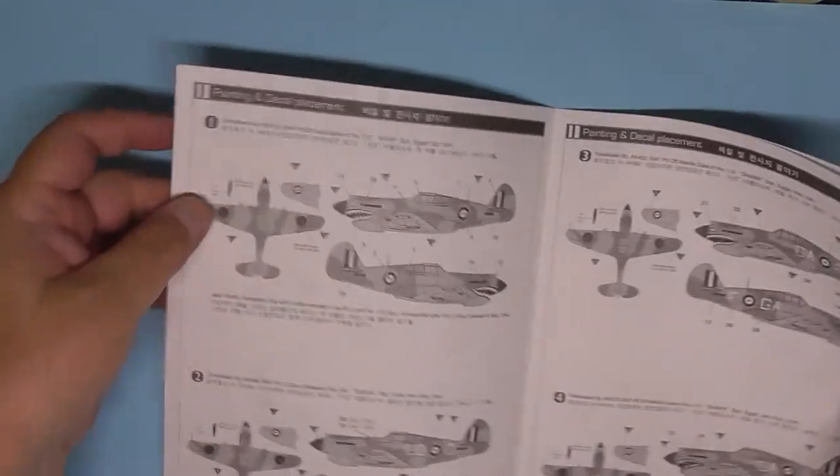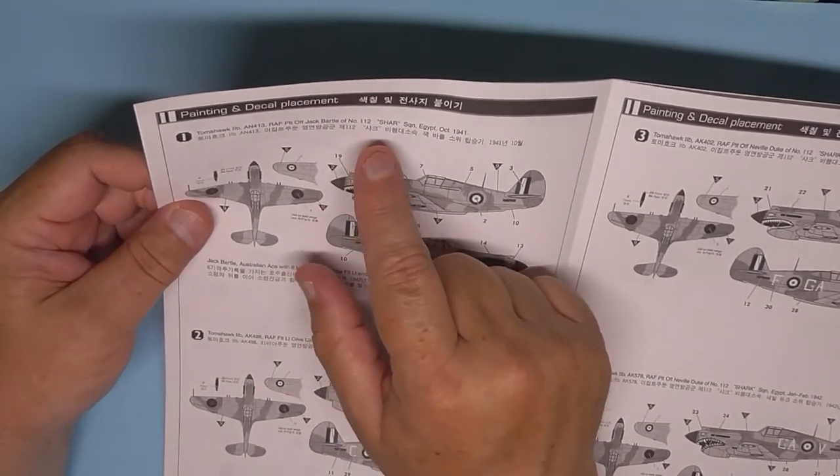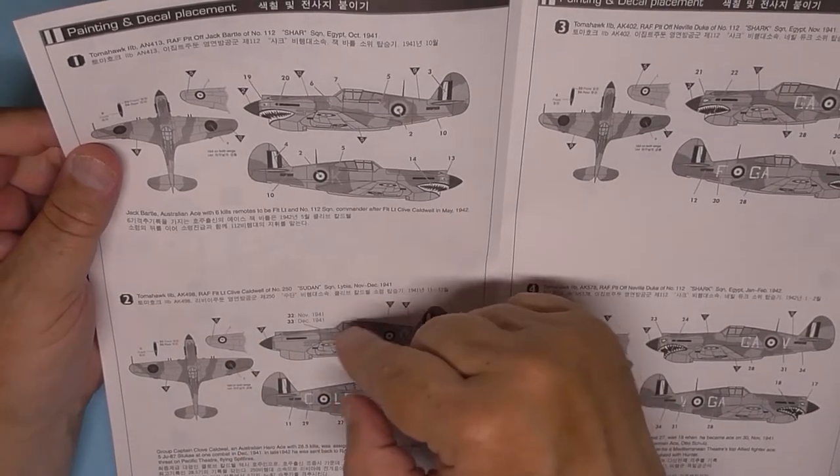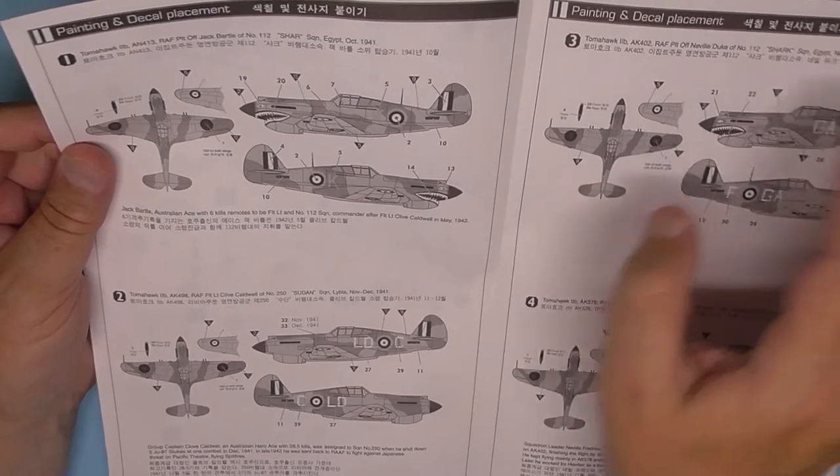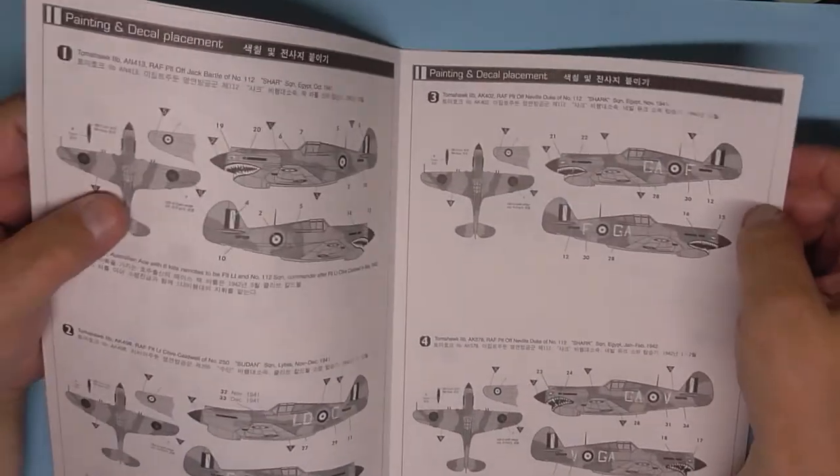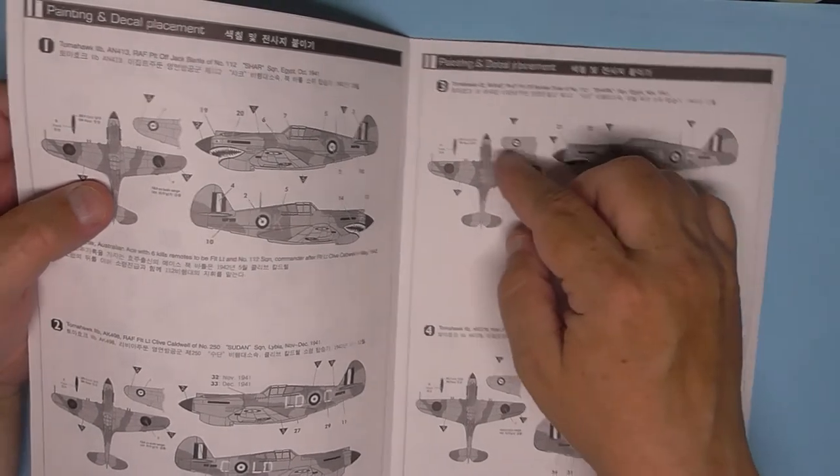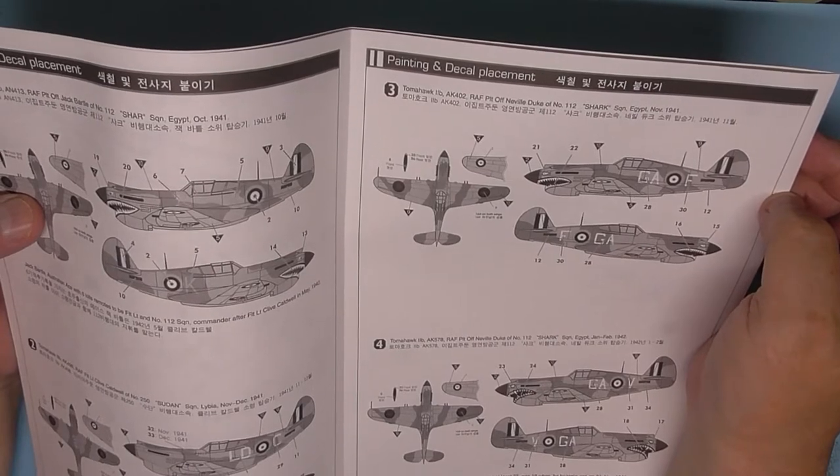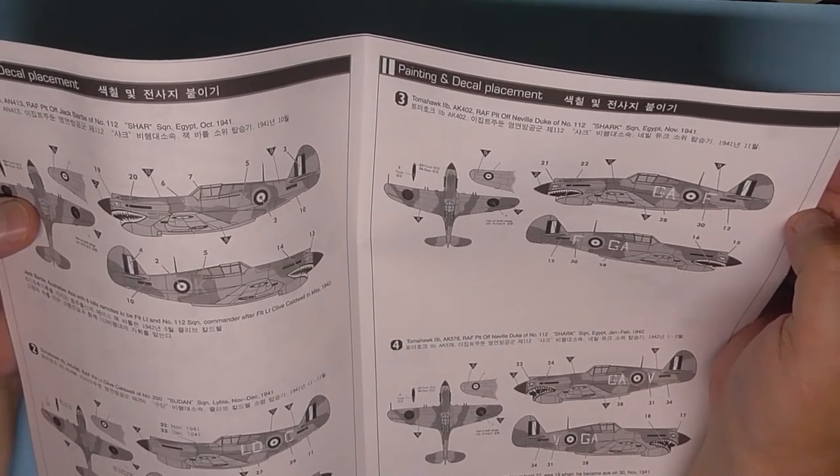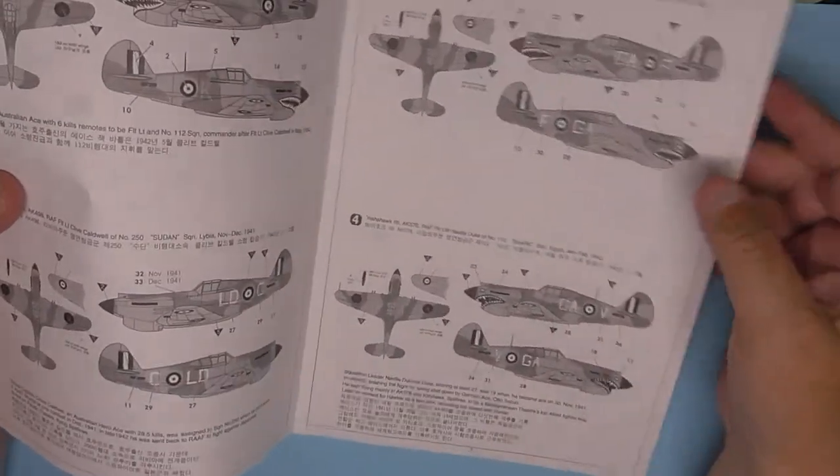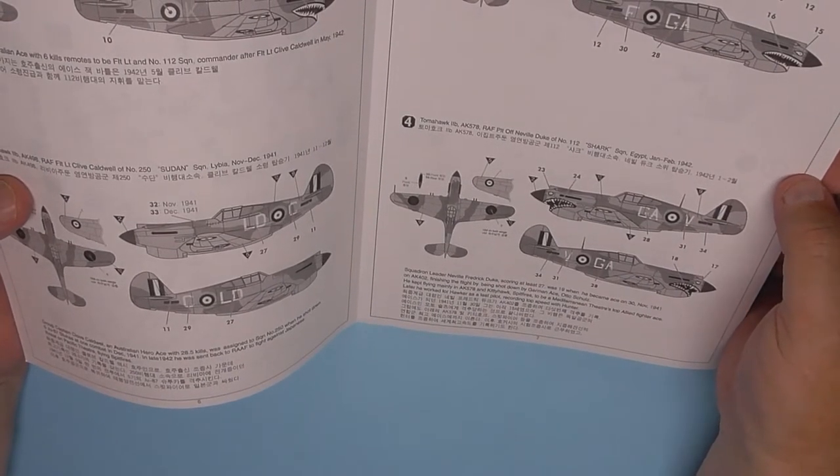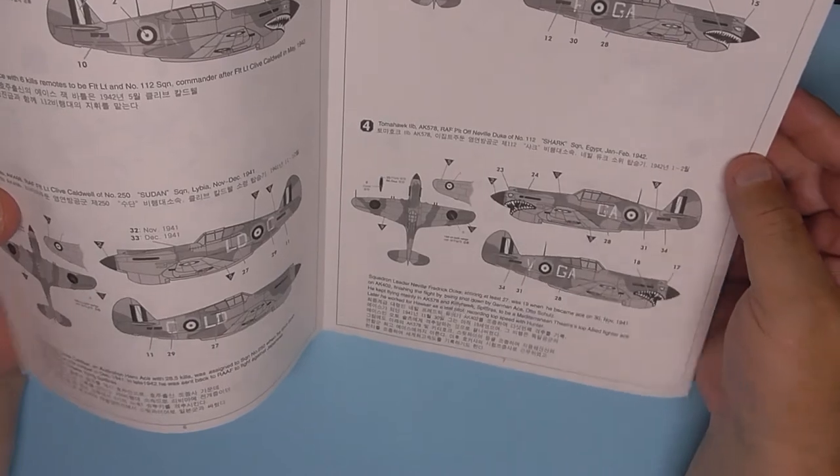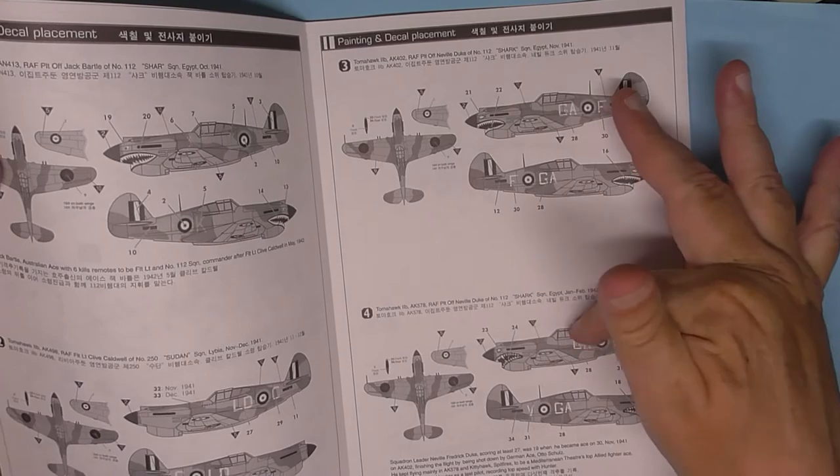And then you've got your color callouts. Jack Pytle of 112 Squadron, Egypt in October '41. Clive Caldwell, Flight Lieutenant Clive Caldwell, 250 Squadron in Libya, November-December 1941. And this is the one I'm going to be making I think. Neville Duke's aircraft, Pilot Officer Neville Duke, 112 Squadron Shark Squadron, November 1941. Yeah, that's the one I'll be making. He shot down 27 and he was 19 when he became an ace on the 30th of November 1941.